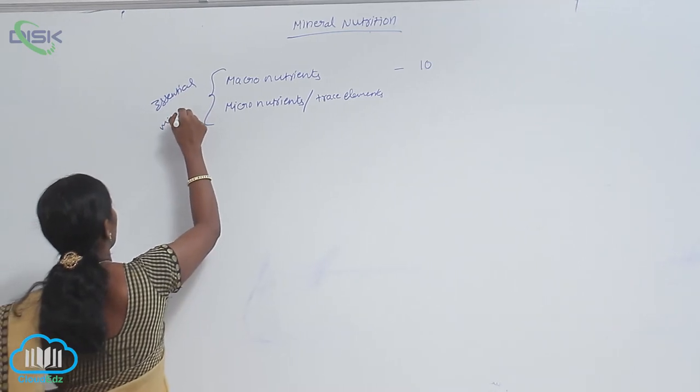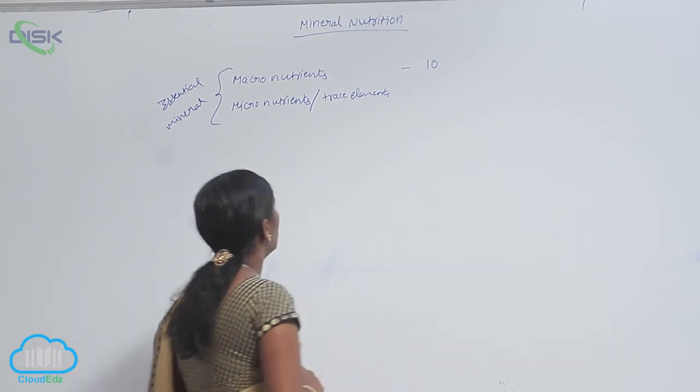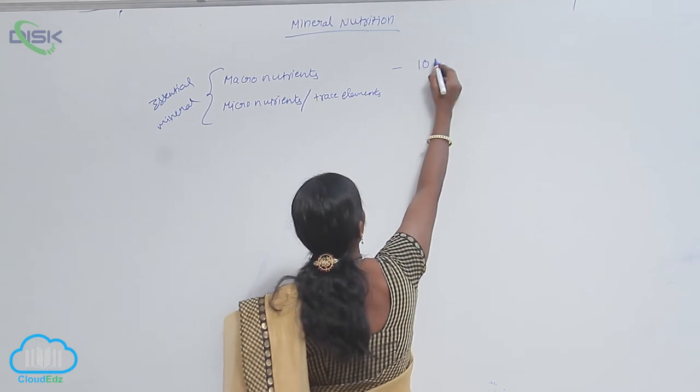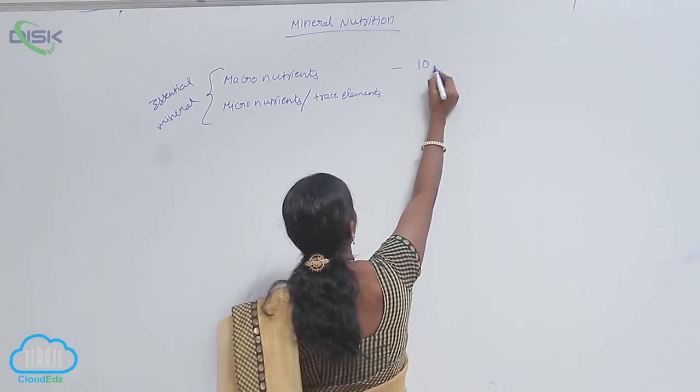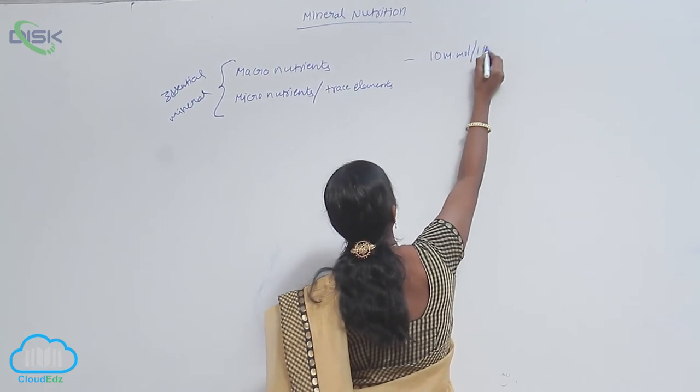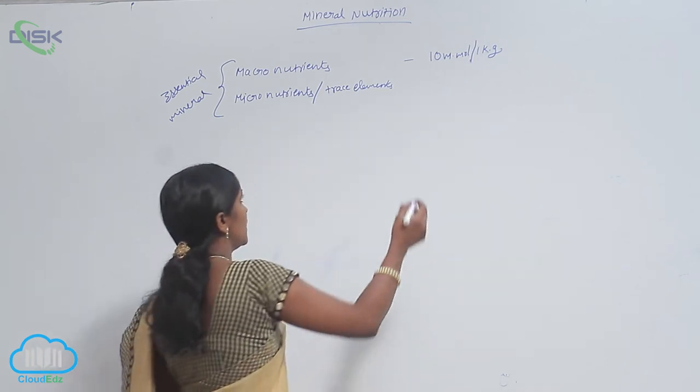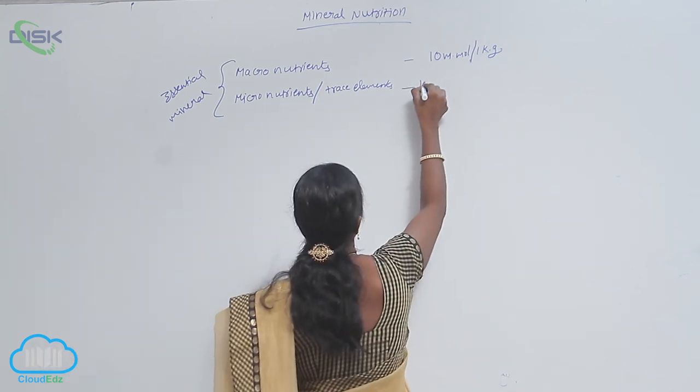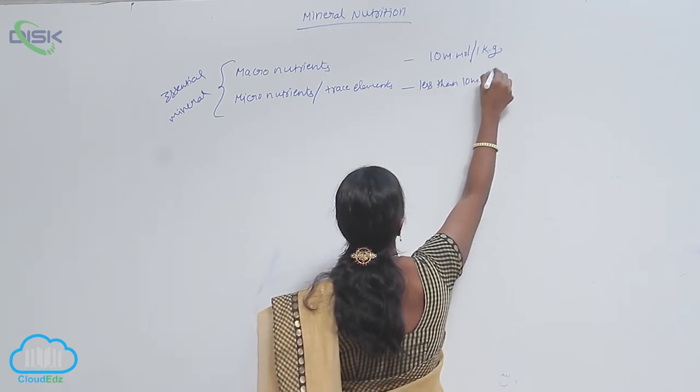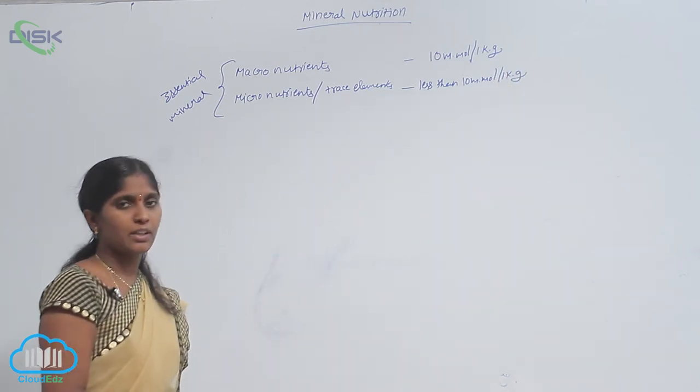These are essential minerals for plant growth and development. Macronutrients are present in quantities of approximately 10 millimolar per 1 kg of dry weight, whereas micronutrients are less than 10 millimolar per 1 kg.